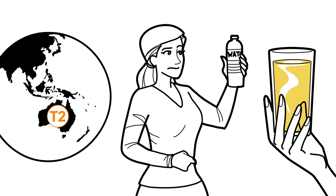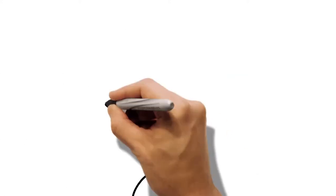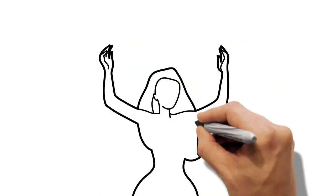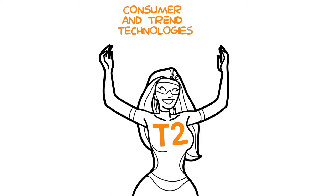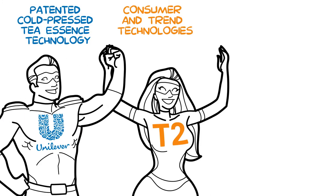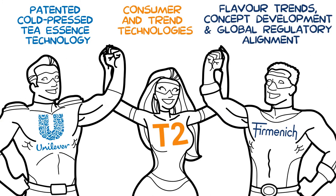This was the best time to activate partners that win. A quick solution was needed. By combining the unique synergy of T2's consumer and trend insights, Unilever's tea essence technology and Firmenich's flavour expertise, true inspiration and innovation was ignited and the project began.